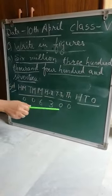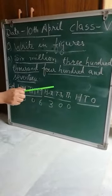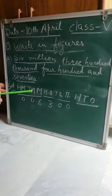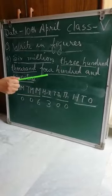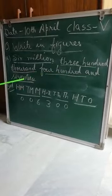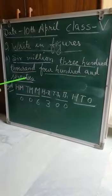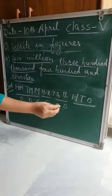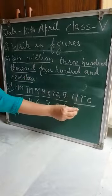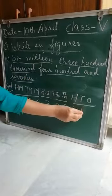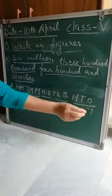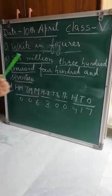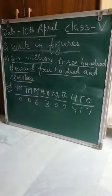This is 300,000. And the next period is 417. How we write 417? Four, one, seven. This is the ones place.